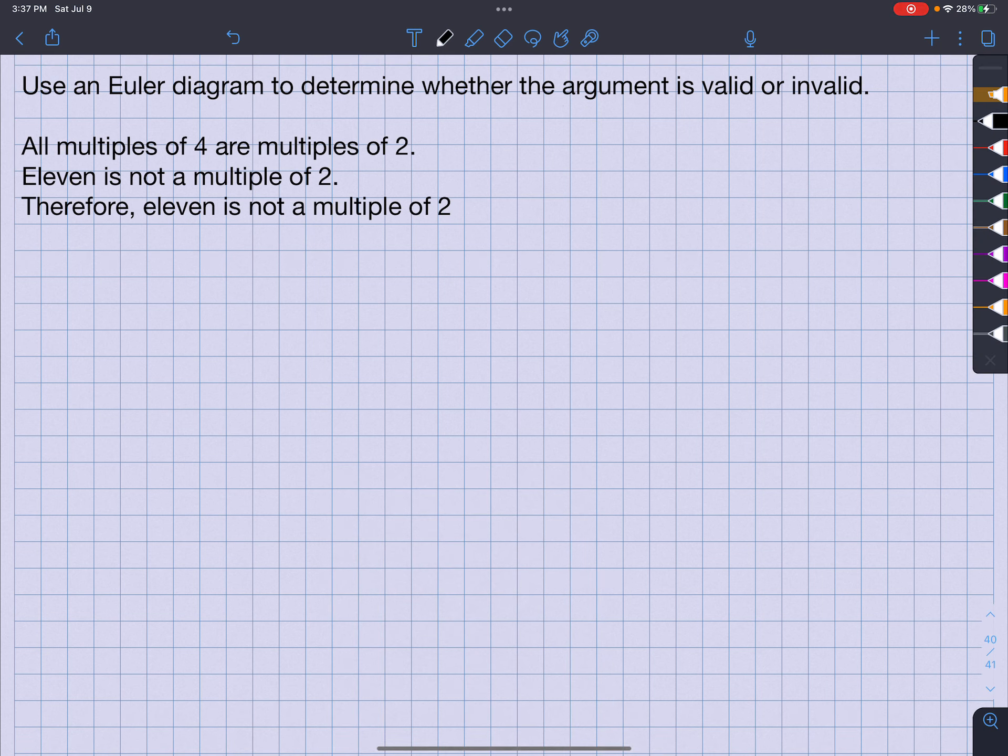So let's take a look. I need to draw these Euler diagrams here. All multiples of 4s are multiples of 2. Okay, so that means all multiples of 4 are multiples of 2. So it's inside the multiples of 2. 11 is not a multiple of 2.